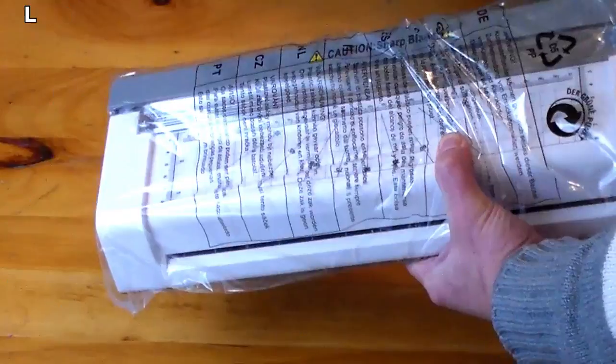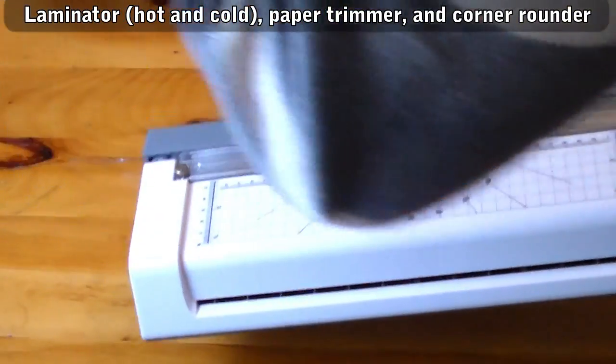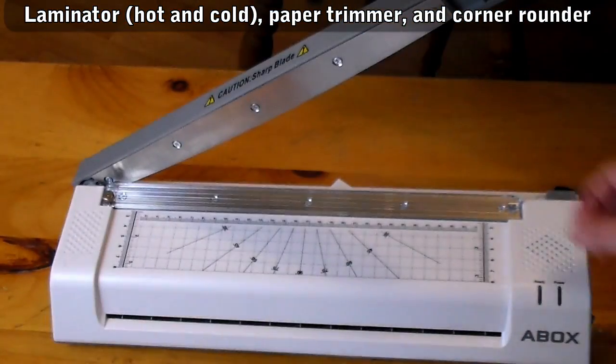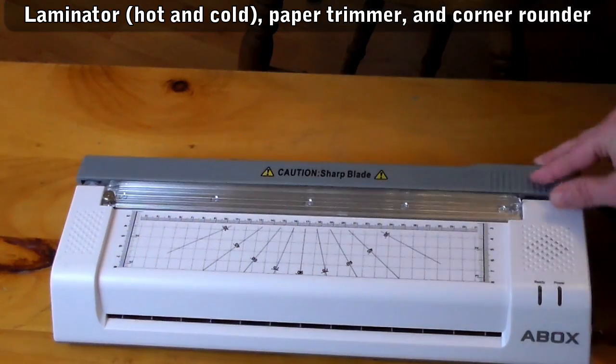First, the 3-in-1 refers to its functions as a laminator both hot and cold, a paper cutter, and a removable corner rounder.